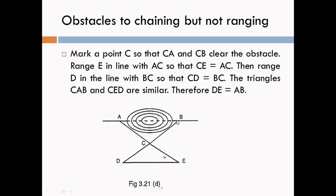This method is used for chaining. From point A, draw line AC and select point C on the ground. Join C to B such that the length of line AC equals the length of line CB. Select point D such that the length of line BC equals the length of line CD, and join D to E. The length of line AB equals the length of line DE because triangles ACB and CDE are similar triangles. Measure the length of line DE on the ground, so DE = AB.